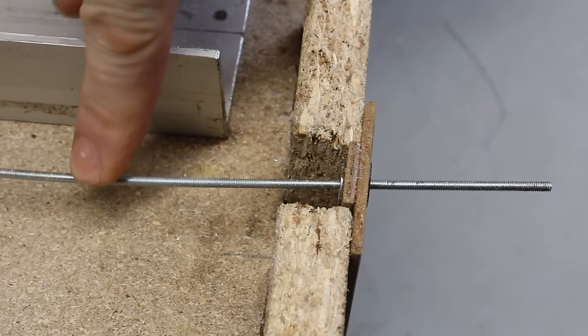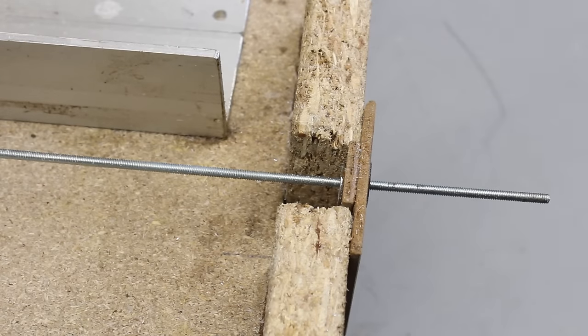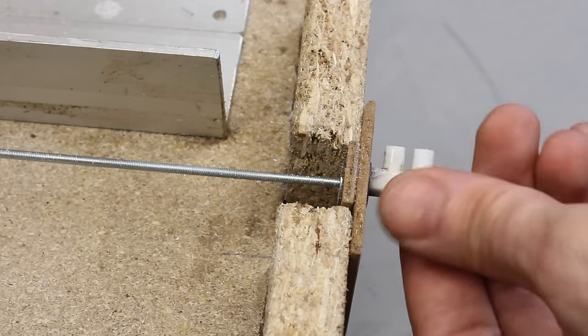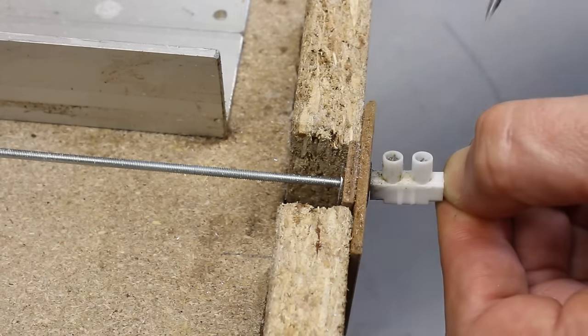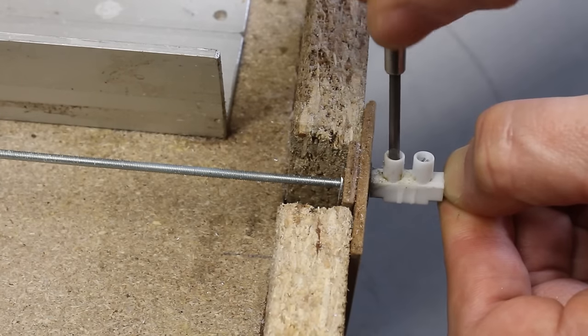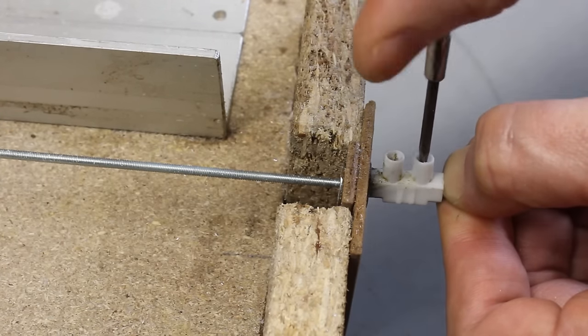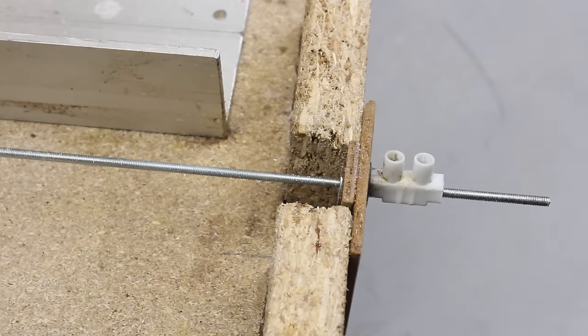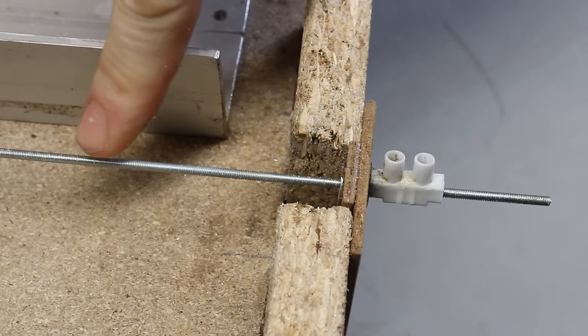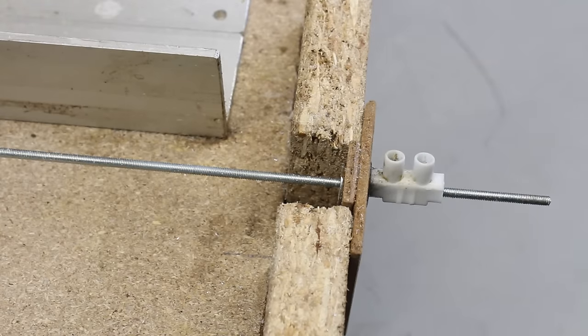The second weak point are the thin 3mm threaded rods that can be bent easily under load. The weakness can be overcome by pre-stressing the steel rods, which is why there are mount points at both ends of the threads now. The pre-stressing is accomplished by two screw terminals.